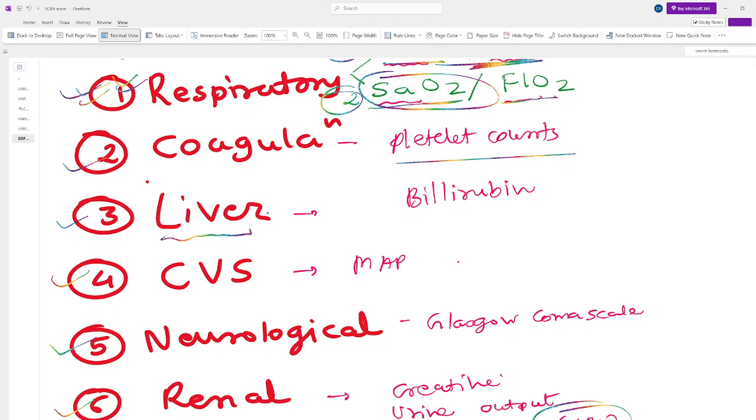To see the liver, how the liver is functioning, we are just taking only bilirubin. We are not taking any other liver enzymes because we want quick scoring.